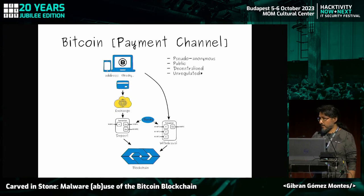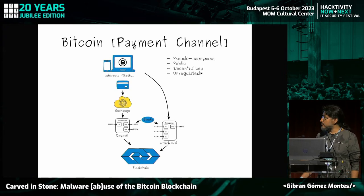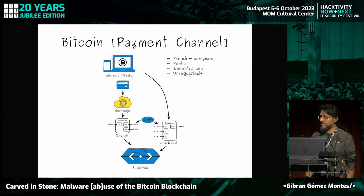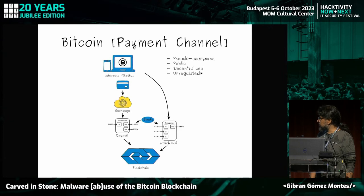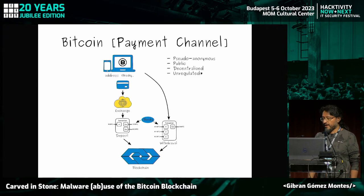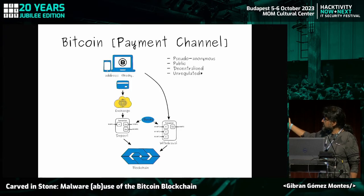First of all, I think everybody knows Bitcoin as a payment channel — it can be used to produce payments very easily. It is pseudo-anonymous, public, decentralized, and unregulated in a lot of countries. All these properties are good for privacy, but they also attract a lot of cybercrime.